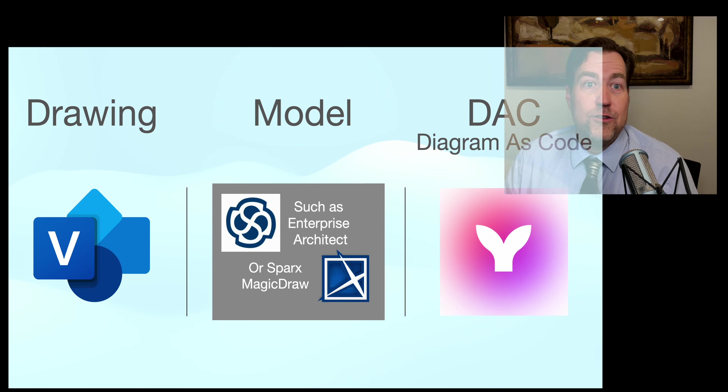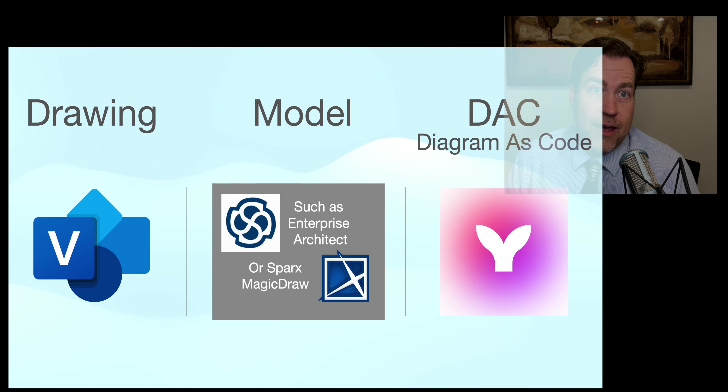Another approach that's really starting to catch on is called diagrams as code. This has the big advantage of fitting right into your DevOps or DevSecOps pipeline. The code lives in GitHub or Bitbucket, so the diagrams literally live alongside your code base — they are a code base.